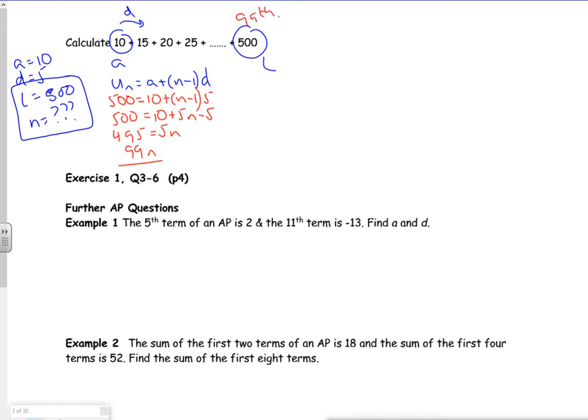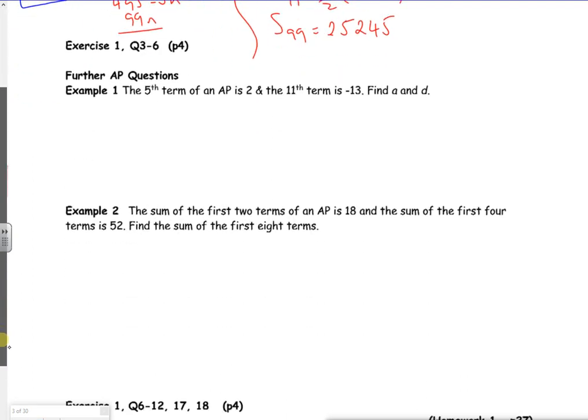And because I've got the last one, I can use N over 2 first plus last. So the sum of the first 99 terms is 99 over 2, 10 plus 500. Which gives us 2, 5, 2, 4, 5. There you go. Alright. See if we can get through these next two before we run out of time.